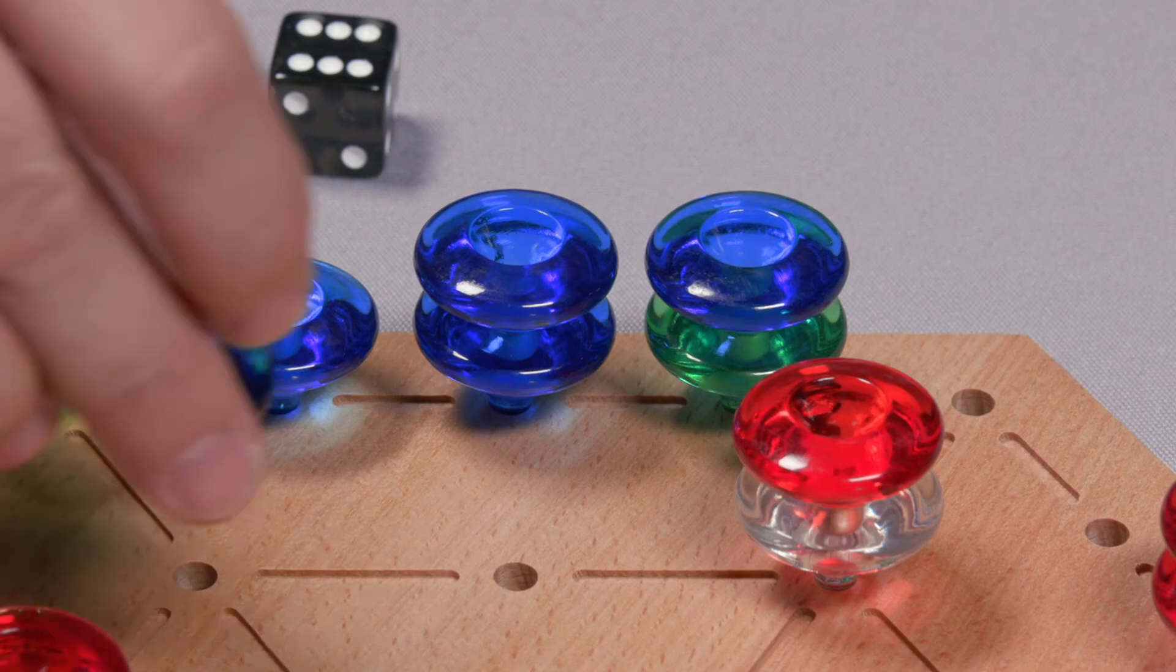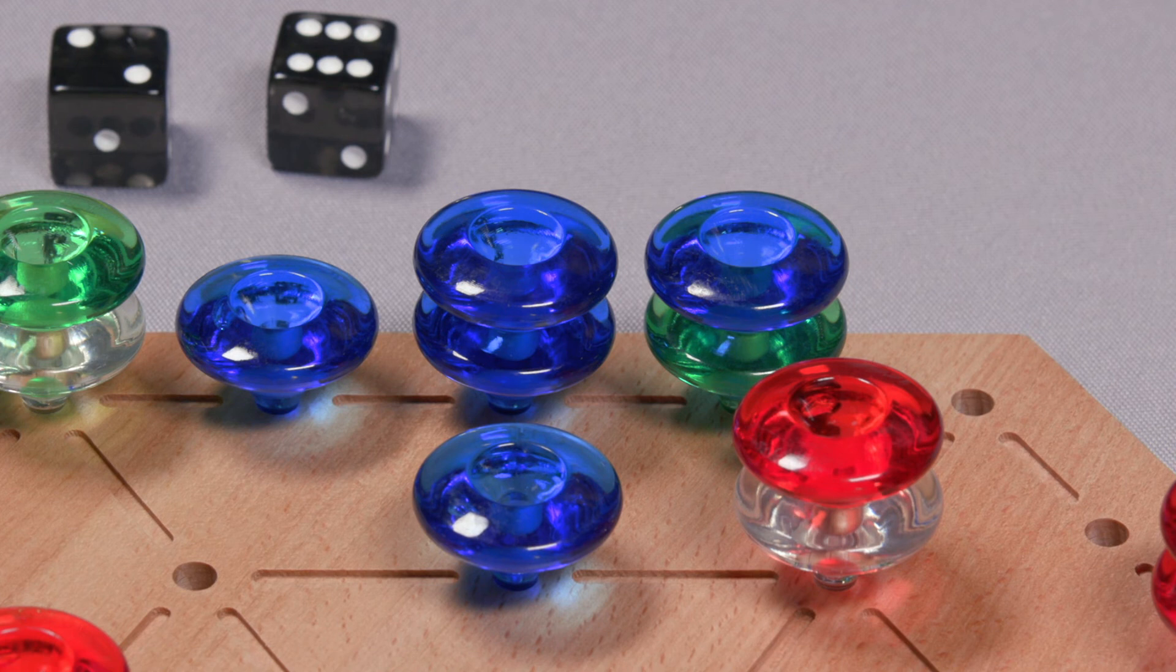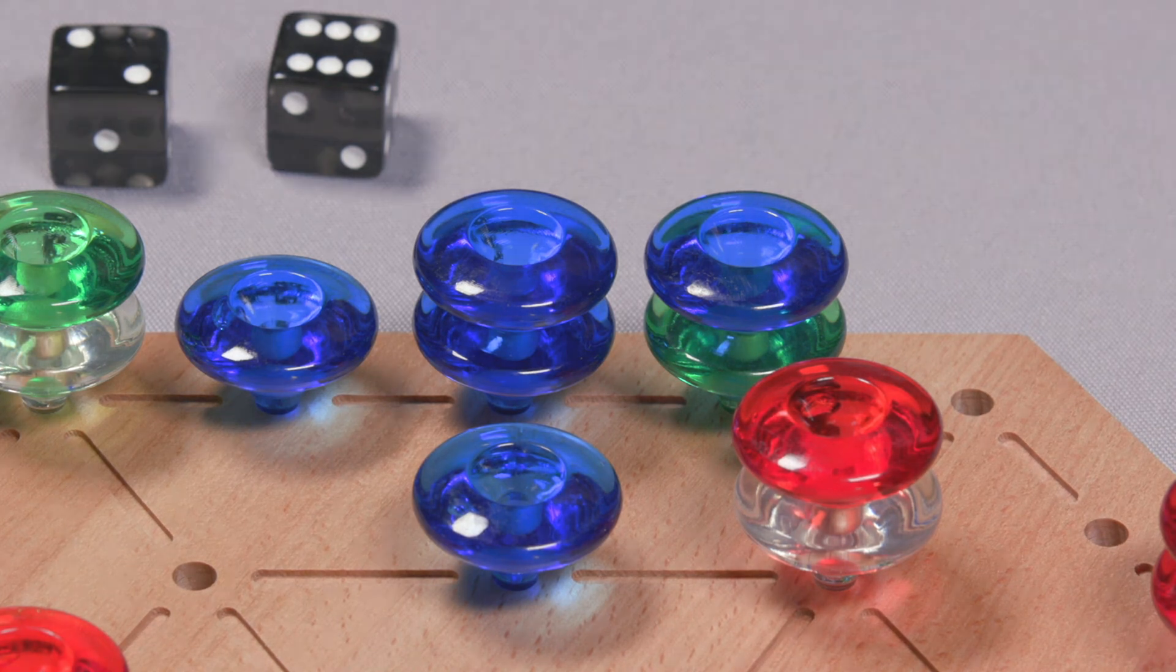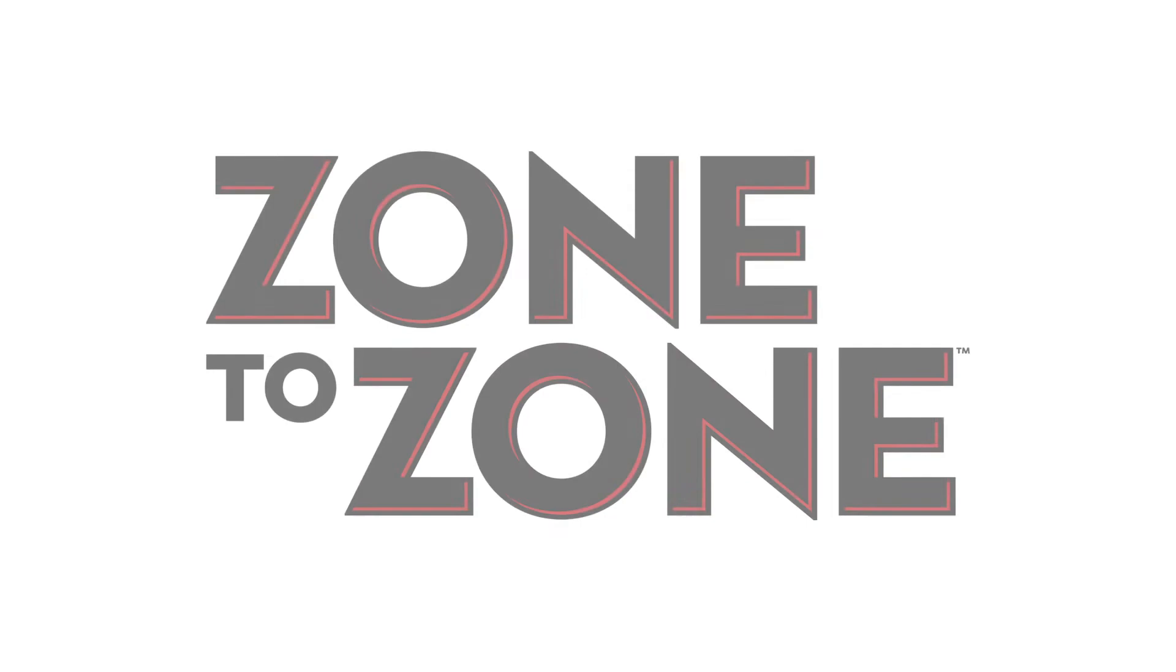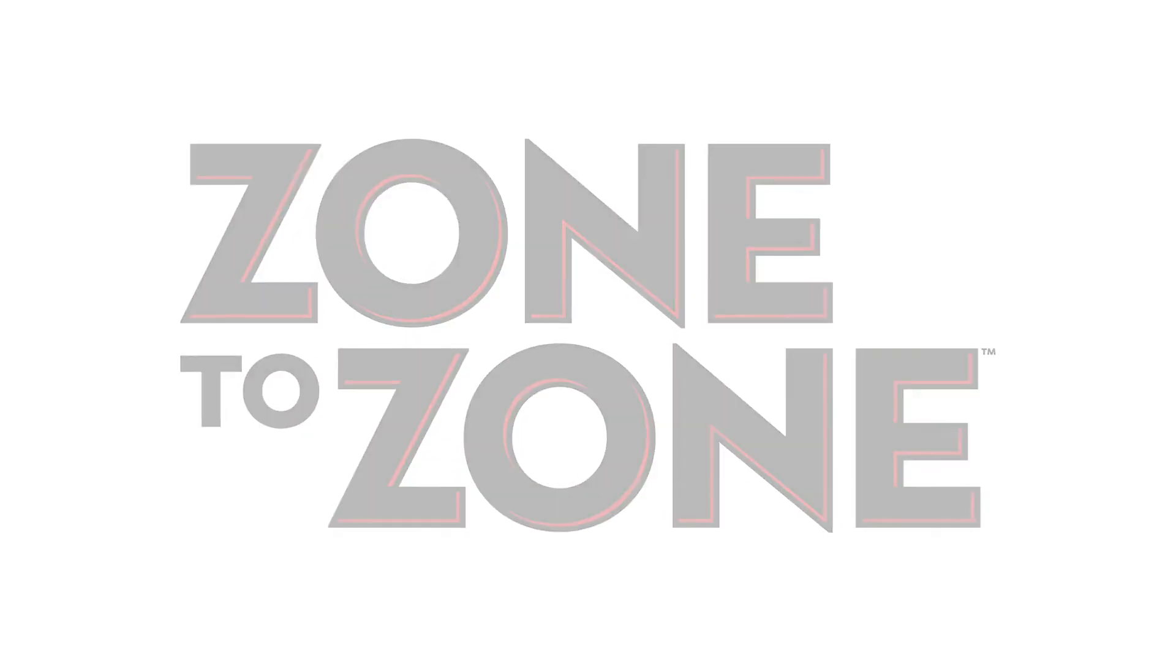The first player to get more than half, in this case five, of their starting pieces to the opposite side of the board in any of the same positions as they started in wins the game. Sharpen your strategic thinking and plan your moves wisely playing Zone to Zone.